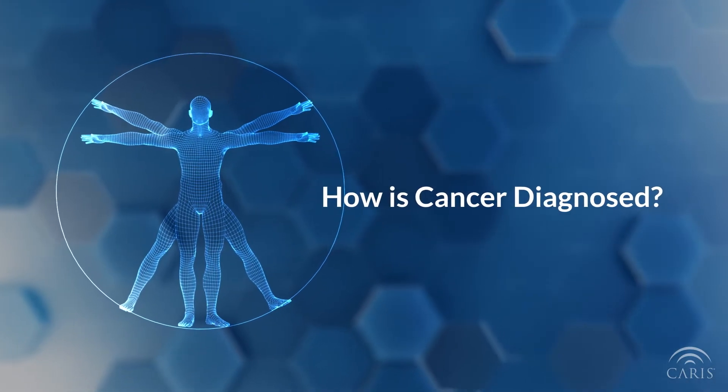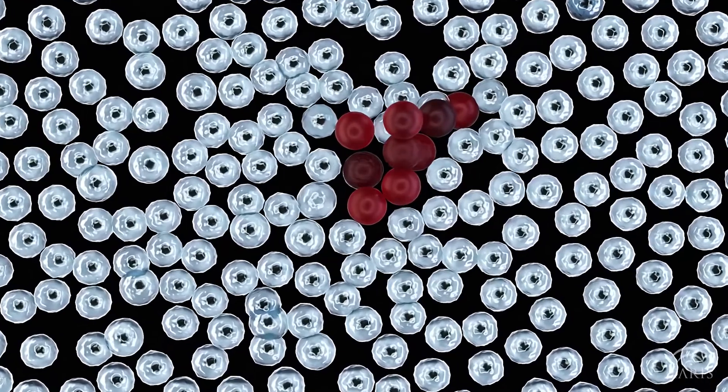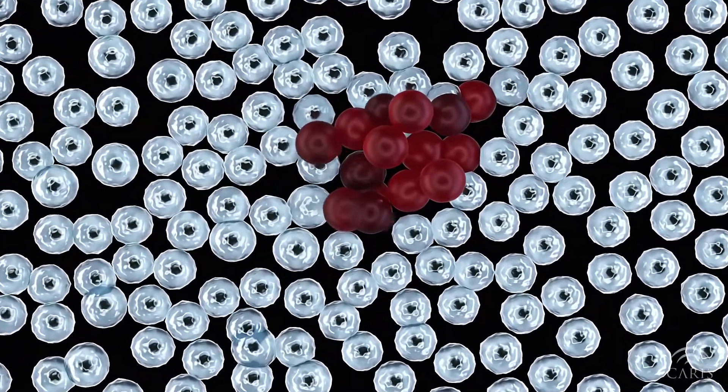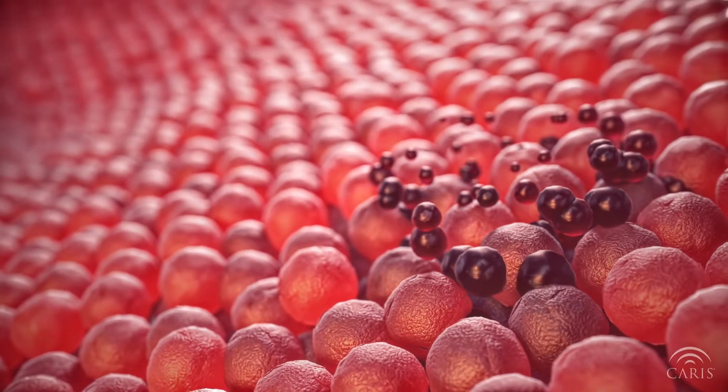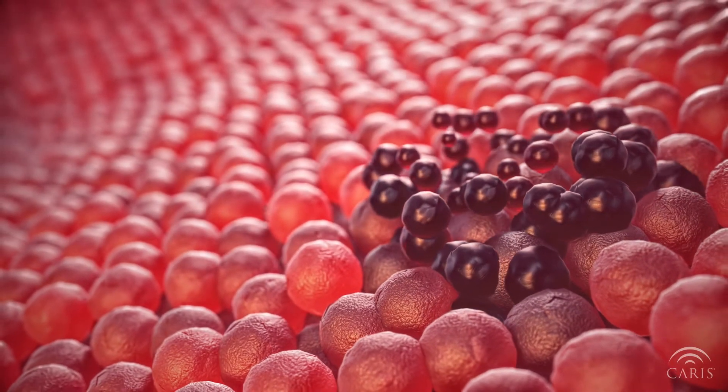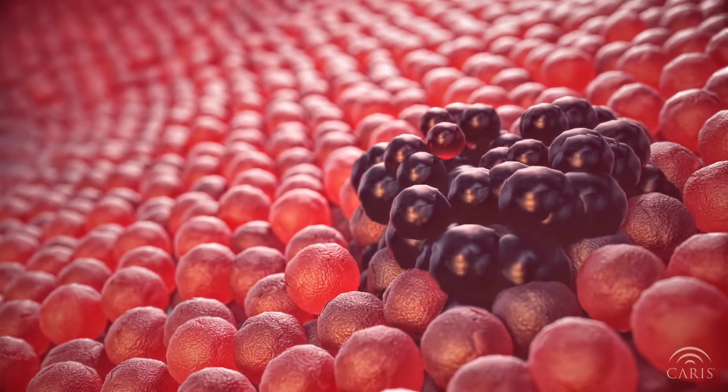How is cancer diagnosed? Cancer happens when cells within our bodies develop errors and continue to create new cells containing those same errors. These errors can cause the cells to divide uncontrollably, forming a mass or tumor in a specific area of the body.